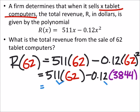Let's combine these two together. 511 times 62. Did I get that right? And 0.12 times 3844. Whoa, I did not type that in correct.